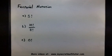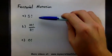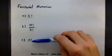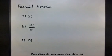Welcome to My Secret Math Tutor. Now in this example we're going to talk a lot about factorial notation. So you may have seen this in probability a lot, and it's basically the exclamation mark next to the number. This is known as factorial notation.